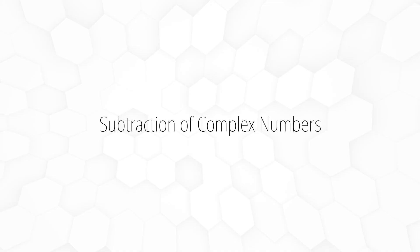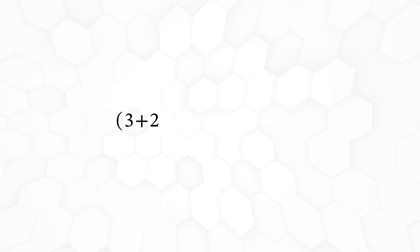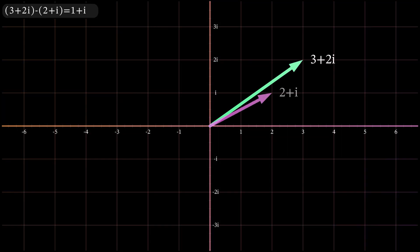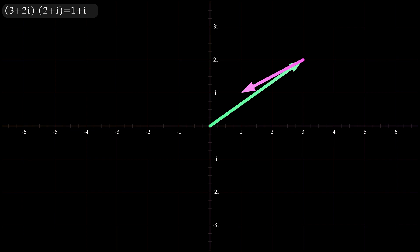Subtraction is simply the inverse of addition, and algebraically it is also calculated as you would expect. 3 plus 2i minus 2 plus i equals 1 plus i. For visualising subtraction, it can be useful to think of adding the negative of the value. So we can think of adding minus 2 minus i onto 3 plus 2i.